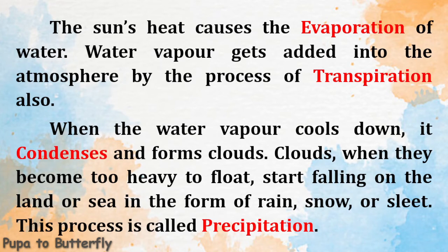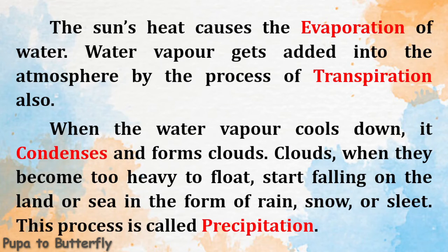When the water vapour cools down, it condenses and forms clouds. Clouds, when they become too heavy to float, start falling on the land or sea in the form of rain, snow, or sleet. This process is called precipitation.